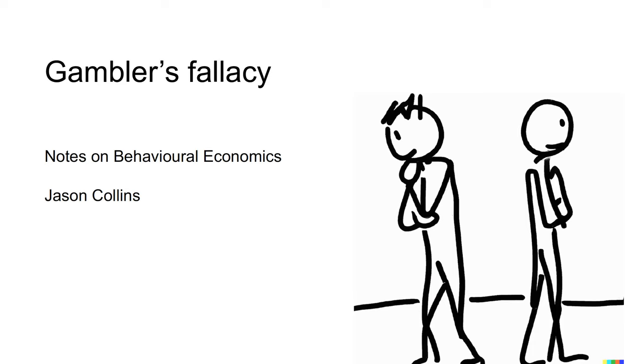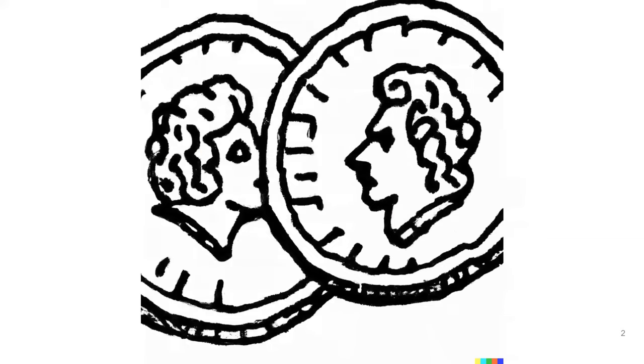For example, following three flips of a coin that all come up heads, a person experiencing the Gambler's Fallacy would believe that a tail is more likely on the next flip.